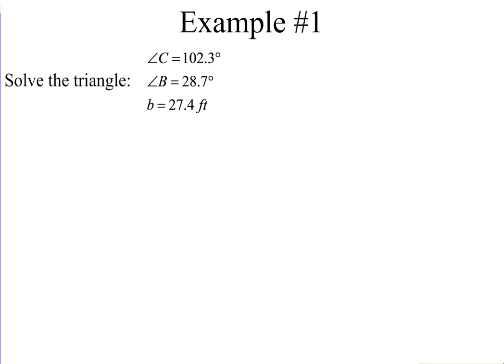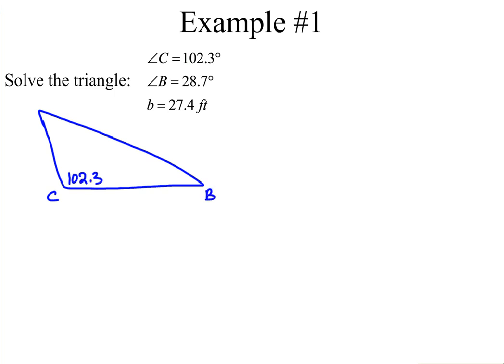Looking at our first example, I'm going to draw the triangle based on the conditions given. We have an obtuse triangle. Angle C is 102.3 degrees, angle B is 28.7 degrees, and side B is 27.4 feet. The three missing things are side A, side C, and angle A. Since all three angles add up to 180, angle A equals 180 minus 102.3 minus 28.7, which gives us 49 degrees.